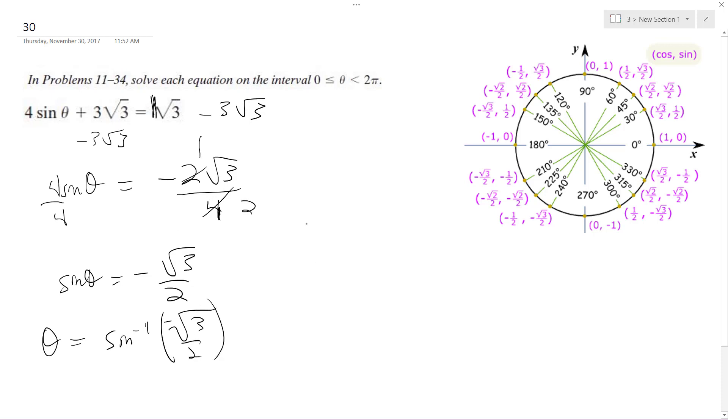And actually, theta, so in this case, between 0 and 2 pi for where sine is equal to negative root 3 over 2, that occurs at 315 degrees and 225 degrees, so it's equal to 5 pi over 4 and 7 pi over 4.